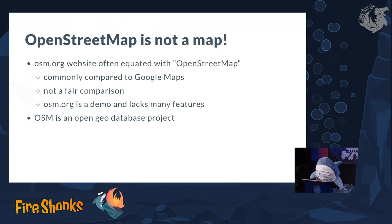The first thing I want to point out is that OpenStreetMap is, despite its name, not an actual map. When people visit the OpenStreetMap website it looks very similar to Google Maps, and people keep comparing them, basically thinking that OpenStreetMap is what the website looks like. But that's not a fair comparison because the OpenStreetMap website is just a demo of what you could do with the data. OpenStreetMap is actually just a database — it's a data project, and that's what people often mistake.